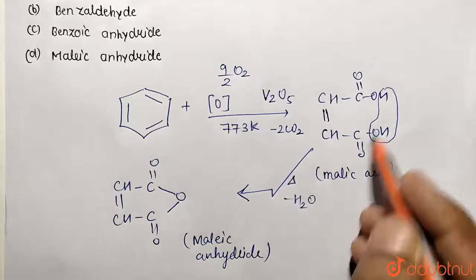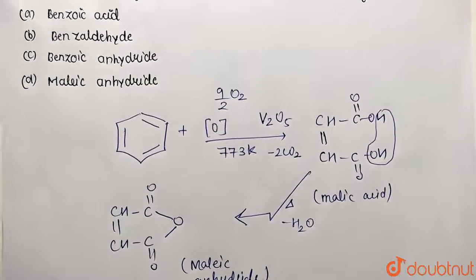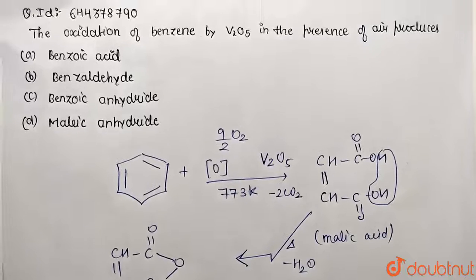So this removal of water takes place by heating it. This was the following conversion, and we have option D, which is maleic anhydride, as the solution for the given problem.